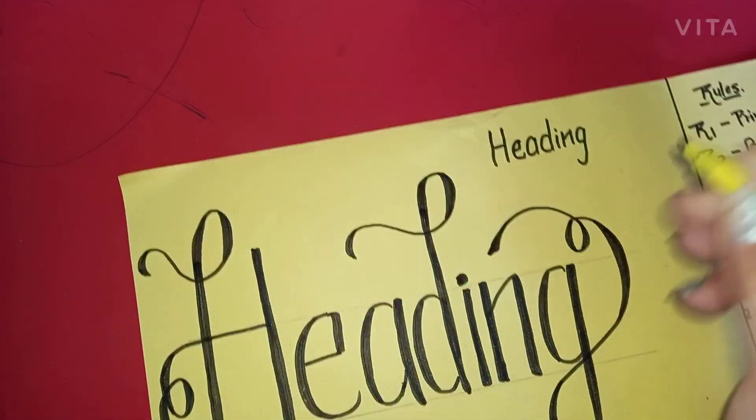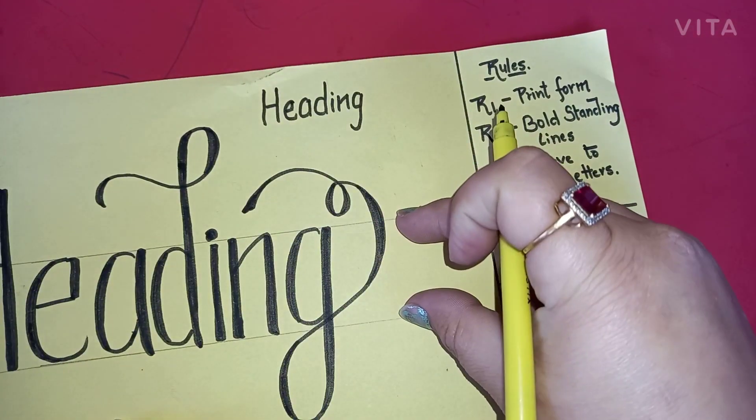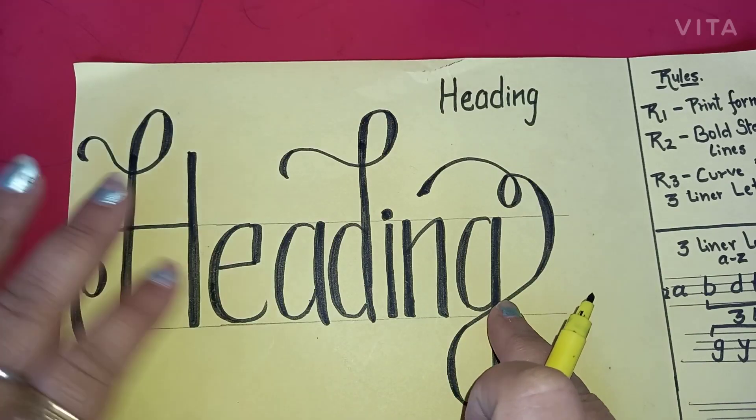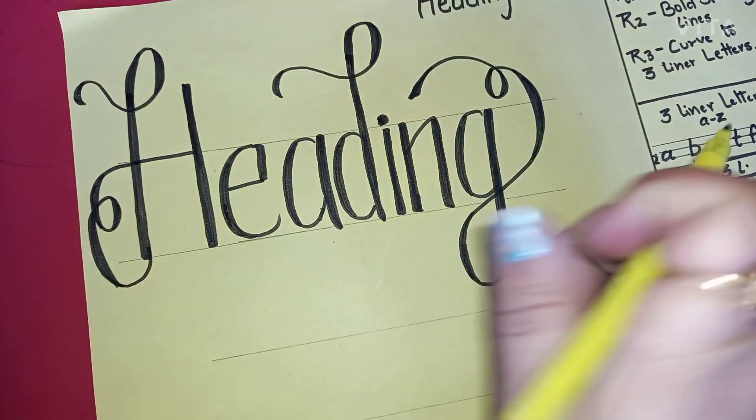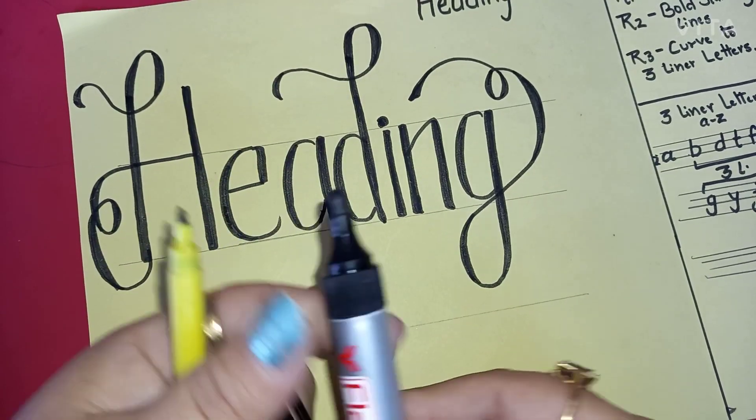Now you can see that we have started with the print form writing and this heading is converted into this using these three easy rules. Isn't it easy? Now let's talk about one more trick to make it even more easy.